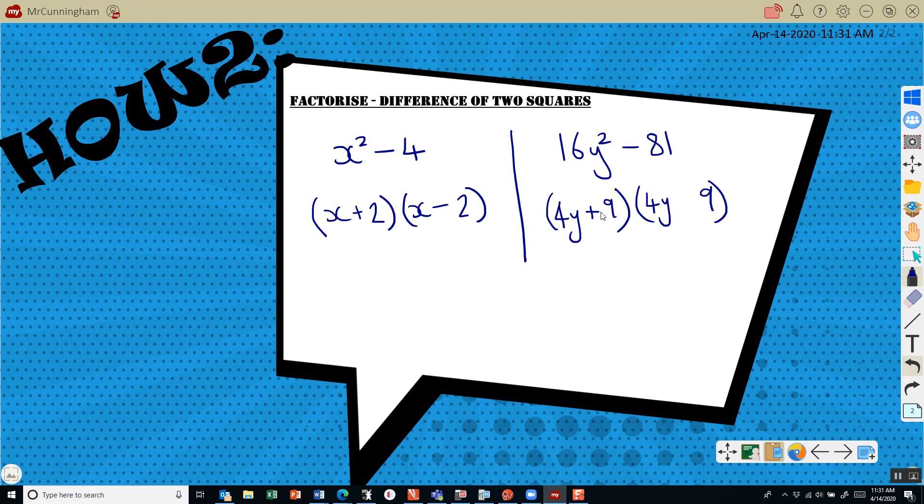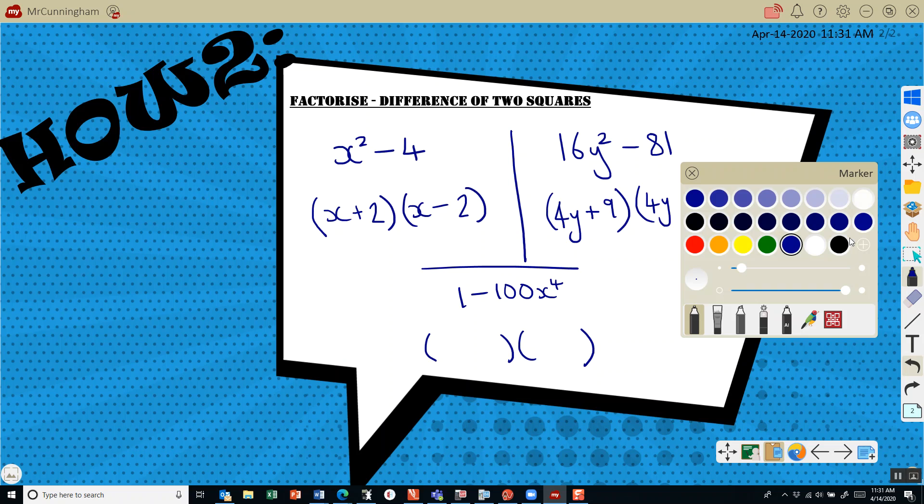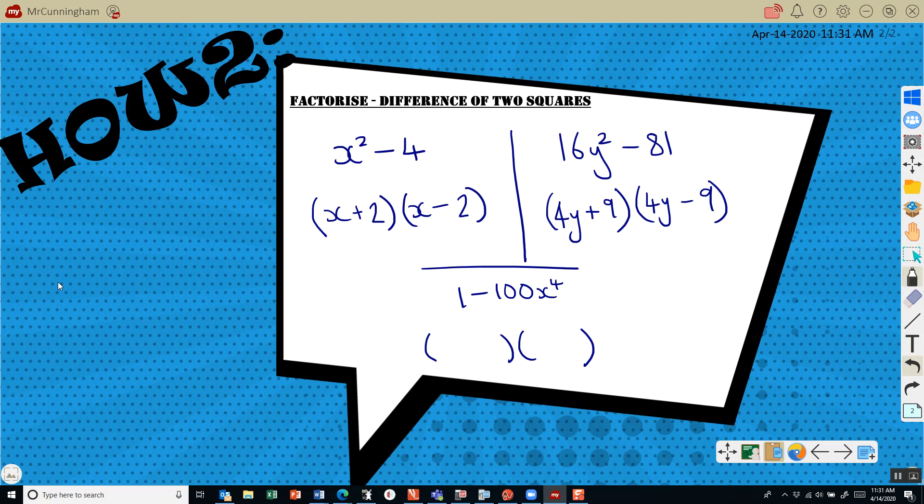And the last one, let's say 1 minus 100x to the 4. Okay, is this a square number? 1 is a square number. What about 100? Is it a square number? Yes. And what about x to the 4? Is x to the 4 a square number? Yes it is, because x squared times x squared is x to the 4. So x to the 4 is a square number.